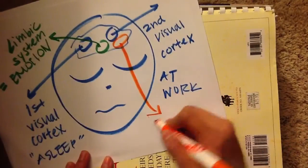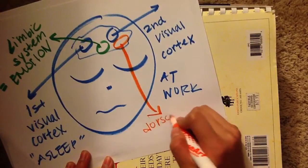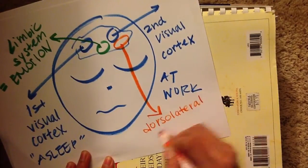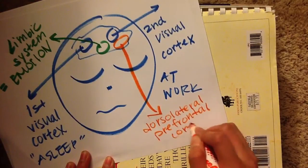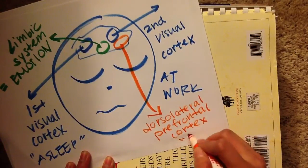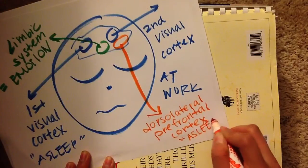Plus, the dorsolateral prefrontal cortex, or the part of our brain that usually controls logic and lets us think rationally, is barely working at all. This allows our dreams to defy the laws of physics and be as improbable and crazy as whatever we can come up with.